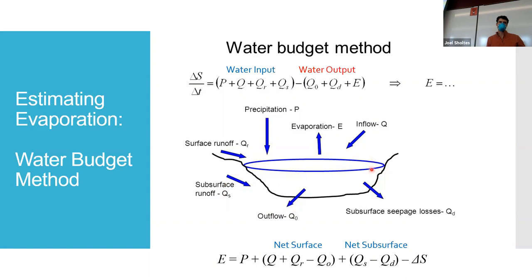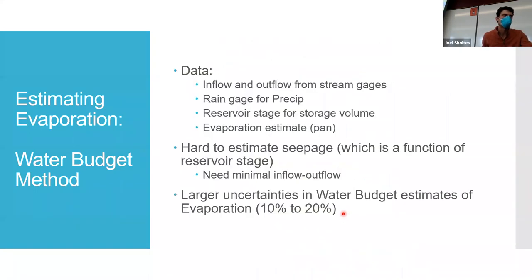You might estimate subsurface flow by going out in wintertime when evaporation is very low and using known stream flow data. The water budget method is intuitive but hard to actually measure. The data needed are stream gauges, rain gauges, reservoir stage and volume. Because of uncertainties, you might be plus or minus 20% given the data uncertainties. Pan evaporation lets us measure evaporation directly from a big metal pan, but it's not a one-to-one relationship with what's happening in a lake.